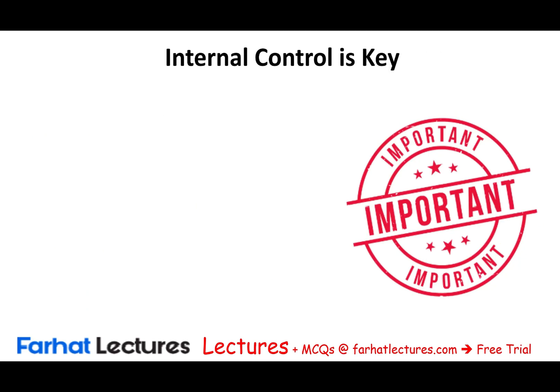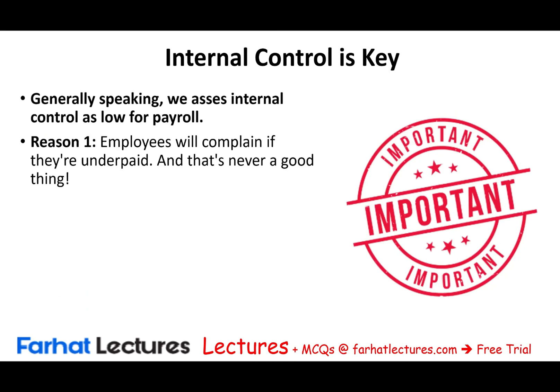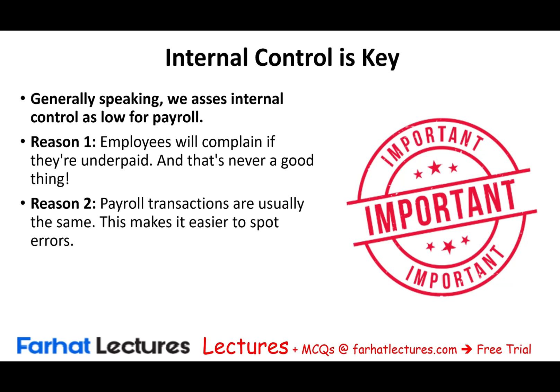Internal control is always a key in any cycle, but in the payroll cycle we assess it as low. Why? First, employees will complain if they are underpaid, so employees are always checking their net pay. Also, if the owner notices they're paying too much, they will say something. Second, payroll transactions are usually the same — if you have a payroll expense of $15,000 every month, that's an easy number to spot. If you're auditing and you see $15,000 every month but suddenly $12,000, you can spot errors easily because there aren't many transactions — maybe twice or three times per month.